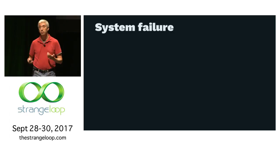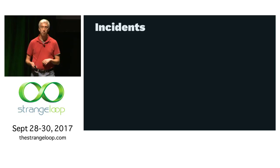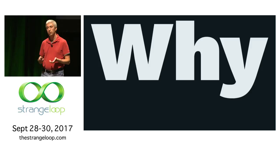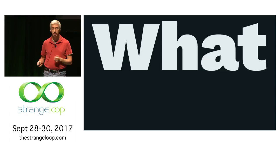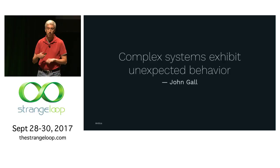So I'm here today to talk about failure — in particular, system failure, how systems fail. Often we call these outages; more generally we talk about them as incidents. I'm going to talk about three things: the how — how these systems tend to fail; the why — why our systems get into unsafe states; and the what — what we can do about it. I'm going to start with the how part, which I'm calling antics.